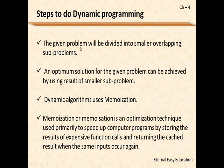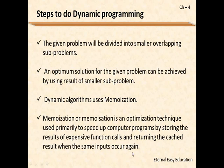First, the given problem is divided into smaller overlapping subproblems. An optimum solution for a given problem can be achieved by using the result of smaller subproblems. Dynamic algorithms use memoization — it is a technique to speed up computer programs by storing the results of expensive function calls and returning the cached result when the same inputs occur again.